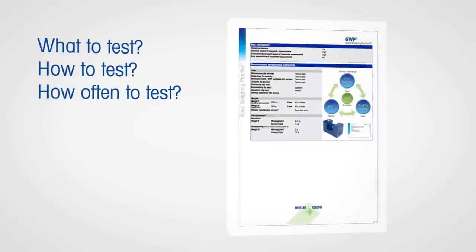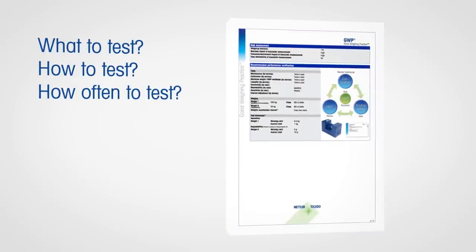We can perform GWP verification on all equipment, whether it is new or already installed, Mettler Toledo or any other manufacturer. Based on your weighing process risk, we will establish an ideal testing program and calibration frequency to assure accurate weighing results at all times.